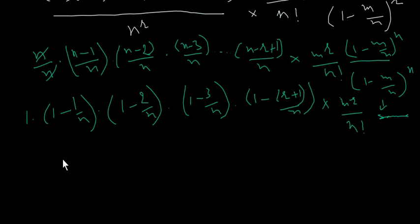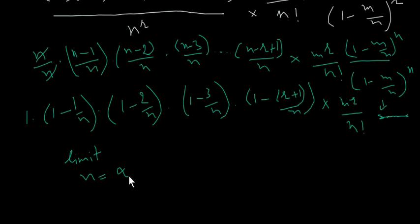Now we are taking the limit. As n approaches infinity, then 1 divided by n will approach 0.